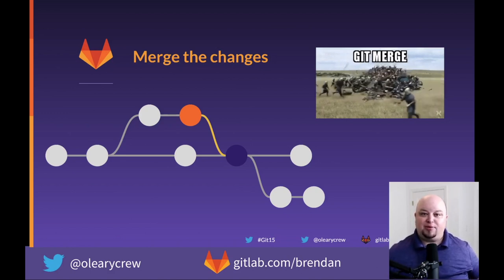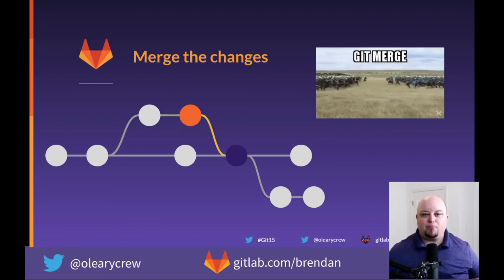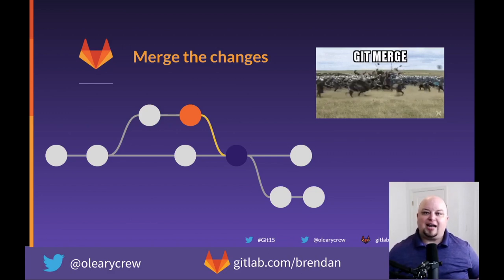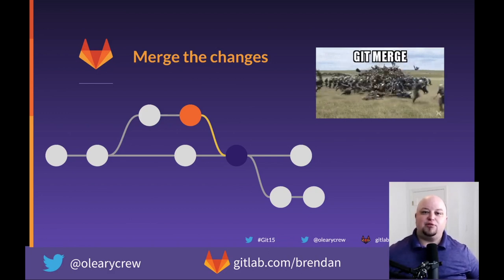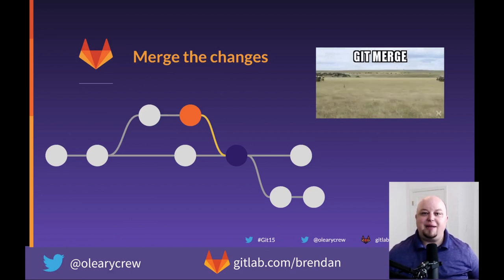Once you're happy with these changes, you can request to merge them back into the main branch. This is called a merge request or pull request, and allows the maintainers or engineering lead to review the changes and what impact they will have on the main branch when merged.